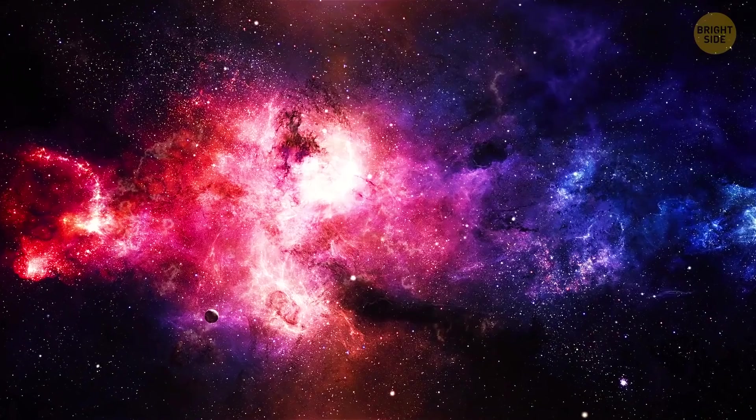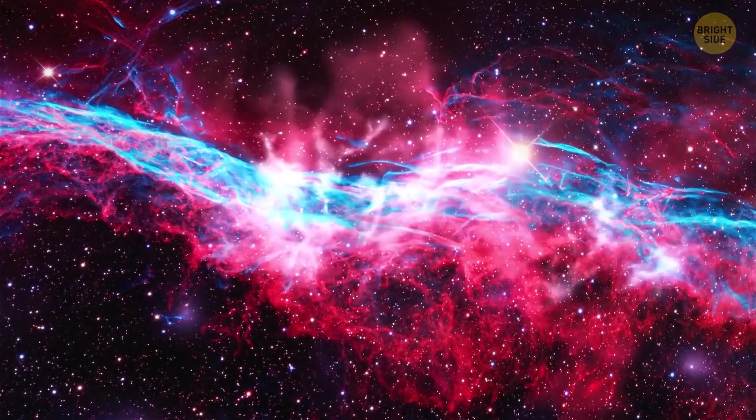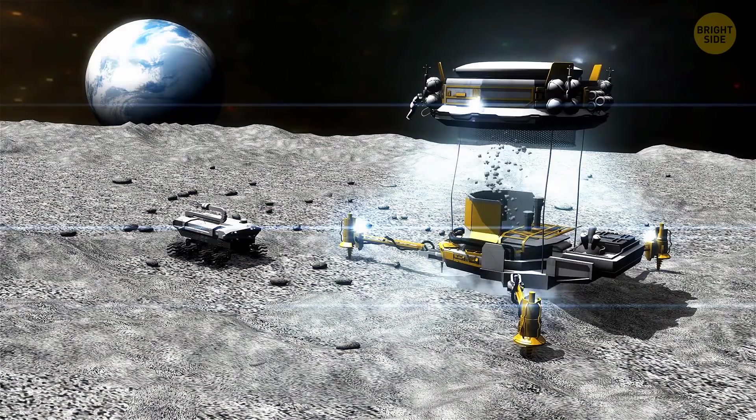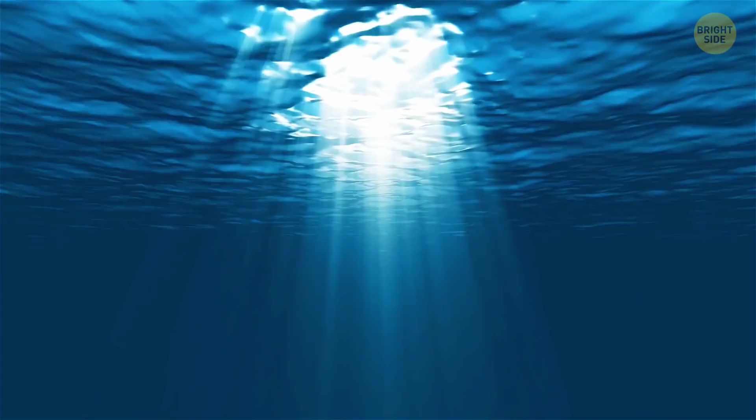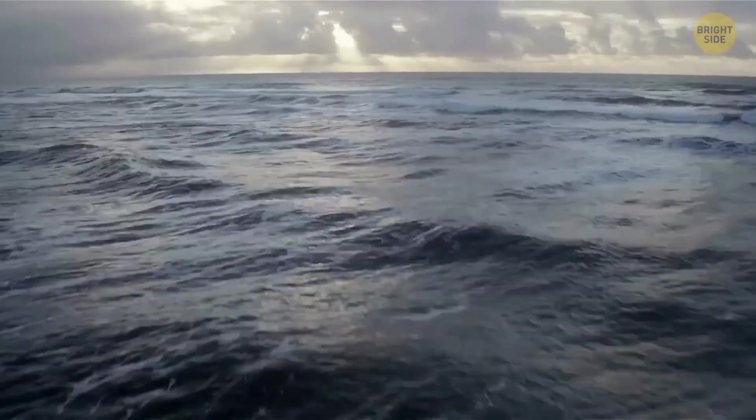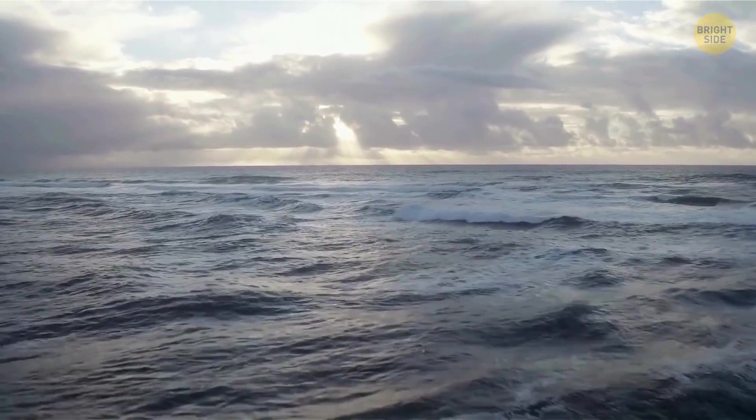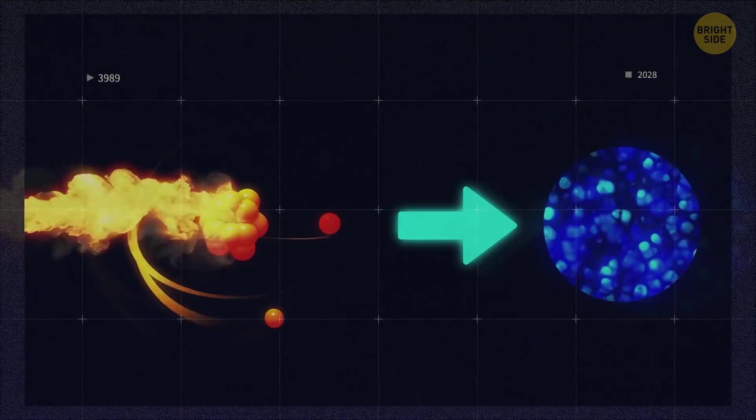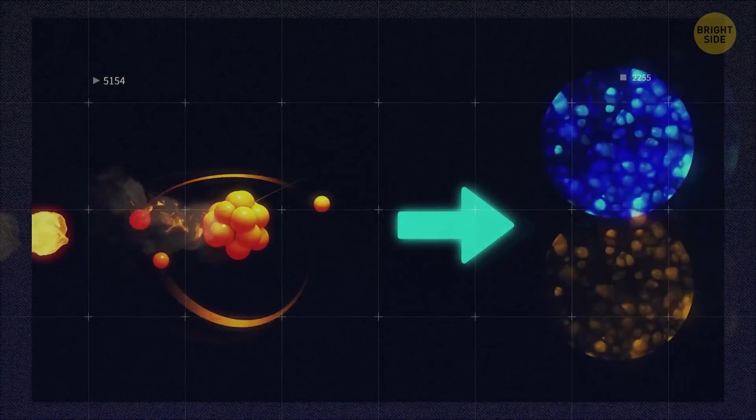But there's now a new advance which suggests another scenario. In space, there's a whole lot of organic matter, and under specific conditions, it could yield so much water it would be enough to fill our oceans a thousand times over. Researchers conducted an experiment in which they heated this organic matter and obtained clear water and oil.